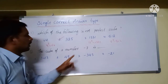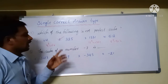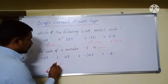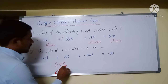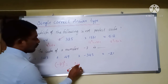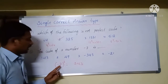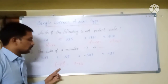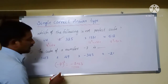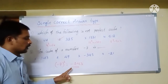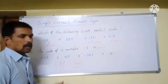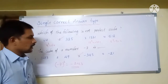Problem 6: the cube of minus 7. We know 7³ = 343, but here the base is negative and the power is odd, so the result is negative. Therefore option 3, which is −343, is the correct answer.